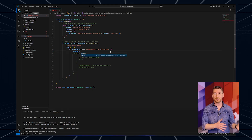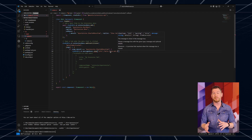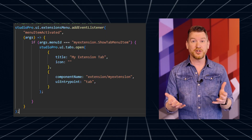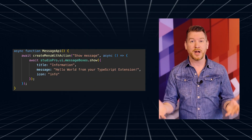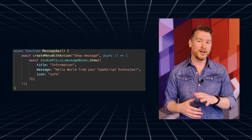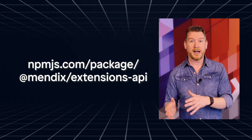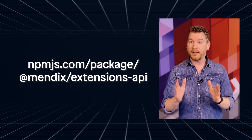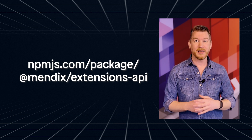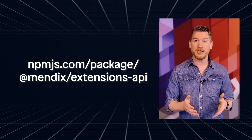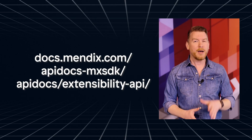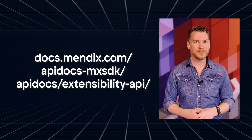You can now create extensions for Studio Pro using TypeScript and JavaScript, so you can extend and customize your Studio Pro experience. For example, you can build extensions to boost productivity, automate workflows, and integrate seamlessly with your development process. Think of extensions that enable custom governance tooling, better product integrations, or anything else you can think of. You can access the API via NPM right now. Get started with extensions using the Extensibility API documentation. How will you extend your Studio Pro experience? Let us know.